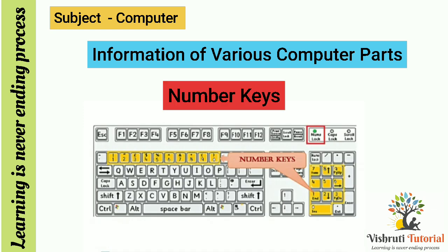Number keys: they are placed at the top of the alphabet keys and on the right side of the keyboard. The number keys are marked with 0 to 9. These are 10 in number. By pressing these keys you can type numbers.